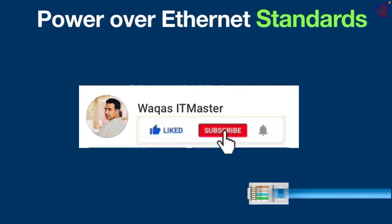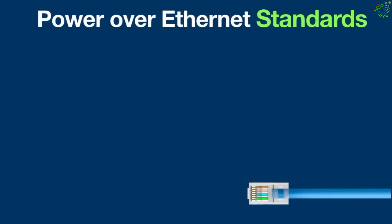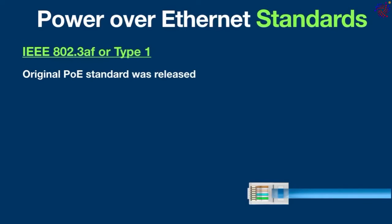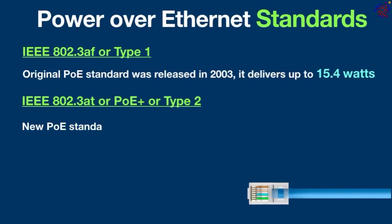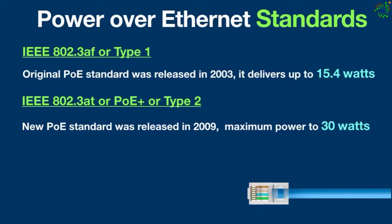PoE standards are broken down into four types which vary based on power capacity. The original PoE standard, IEEE 802.3af, was released in 2003 and is now rebranded as Type 1 — it delivers up to 15.4 watts of DC power to each port. Over time, newer devices required more power, so a new standard, IEEE 802.3at, also known as PoE+ or Type 2, was created in 2009, bumping the maximum power to 30 watts. That was sufficient for IP phones, wireless access points, and security cameras.